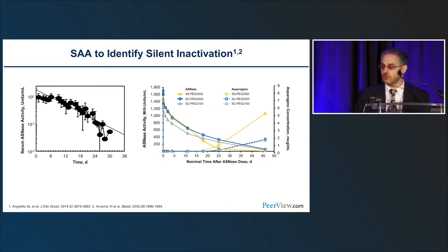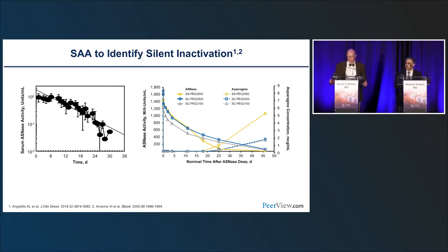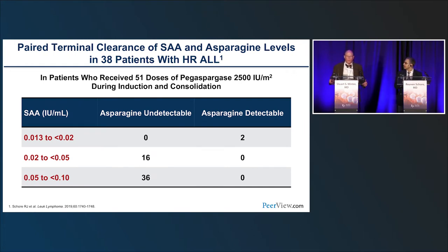Serum asparaginase levels go down over time. Many patients have levels above those cutoffs for at least 20 days. A chart shows pegaspargase and calpegaspargase maintain therapeutic levels above 0.4 and 0.1 for upwards of 25 days. If the serum asparaginase activity level drops more than expected, it can suggest silent inactivation.